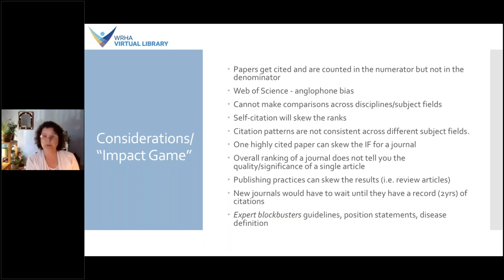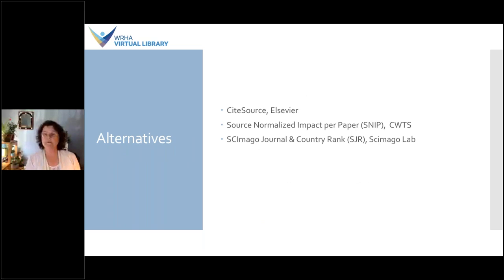And as one author put it, he coined the term 'expert-based blockbusters' — referring to guidelines, precision statements, and disease definitions. These will be widely cited by members of a professional society but are often not evidence-based. All this is to say, as Law and Loong put it, that the JIF is not a solely reliable representation of journal quality; the calculations are not robust enough. But the JIF has remained the top indicator, and since it arrived, several other metrics have come on the market as well.